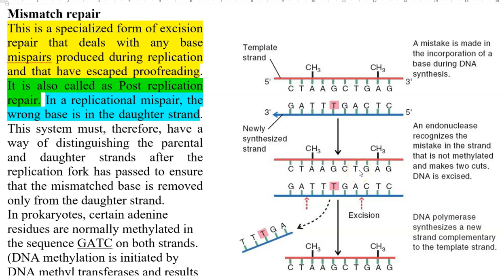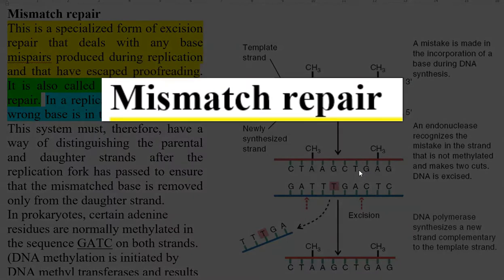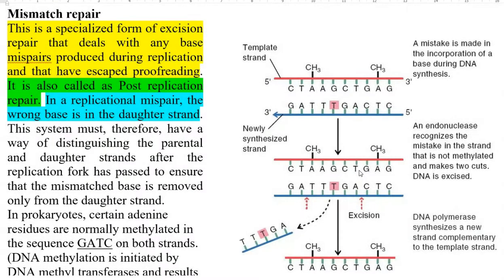The next important DNA repair mechanism that commonly operates on the cell is mismatch repair. This is a specialized form of excision repair system equipped to deal with base mispairs that may be produced during the process of replication — specifically, base mispairs formed during replication that have escaped the proofreading activity of the DNA polymerase enzyme. Such mismatches formed after replication are cleared by the mismatch repair, so it is also referred to as a post-replication repair mechanism of the cell.